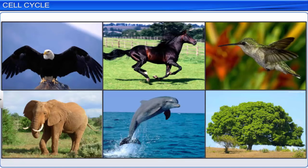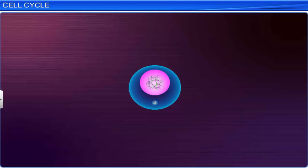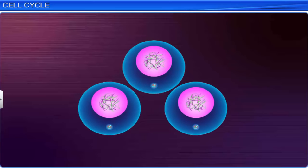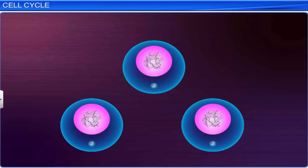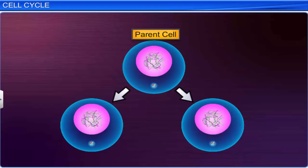All organisms, even the largest, begin life from a single cell. The cell then grows by dividing into two, wherein each parent cell forms two daughter cells, which mature and further divide to form new cells. The process of cell division is vital to all living organisms.